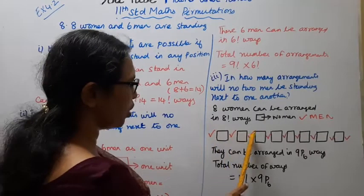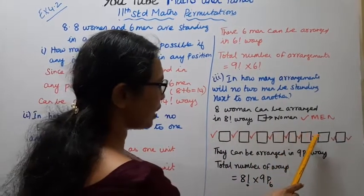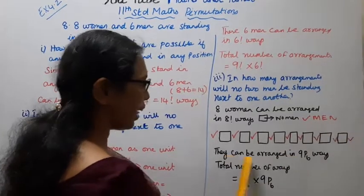How many ways? 1, 2, 3, 4, 5, 6, 7, 8, 9. They can be...